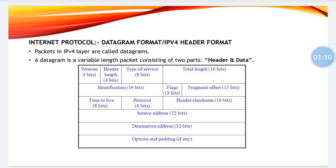Identification has 16 bits allocated. If you remember, the packets are sent in the form of fragments, so those fragments must be particularly identified — for example, this is fragment 1, this is fragment 2, this is fragment 3, and so on.